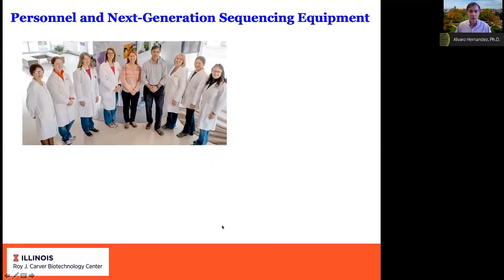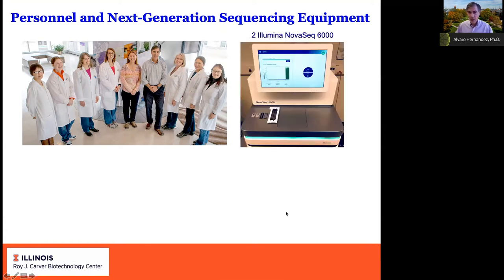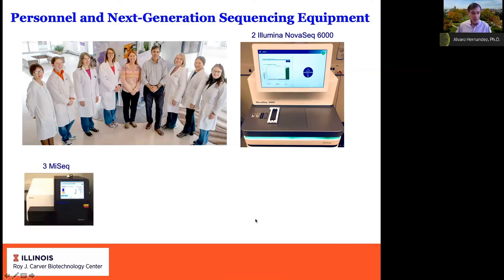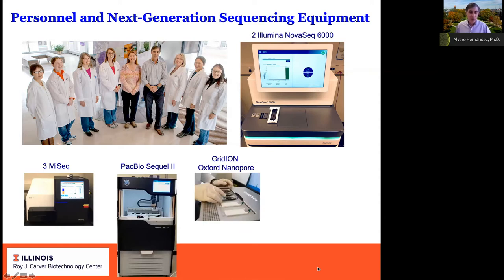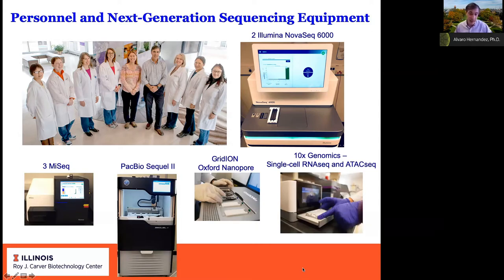Regarding the DNA sequencing facility, we have 12 research specialists dedicated to customer support, DNA and RNA quality control, making libraries, and setting up sequencing events. We have two Illumina NovaSeqs for high-depth applications like RNA-seq, de novo genome resequencing, and DNA methylation. For lower sequencing depth, we have three MiSeqs, mostly used for 16S and microbial genomes. For long-read sequencing, we have a PacBio SQL2 and a GridION Oxford Nanopore. We also do single-cell RNA-seq and ATAC-seq with the 10x Genomics platform.